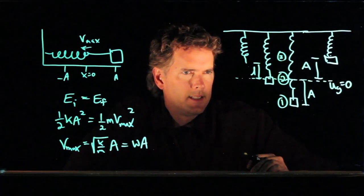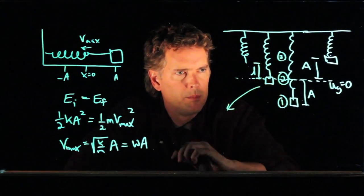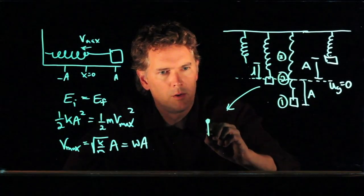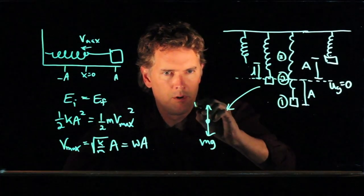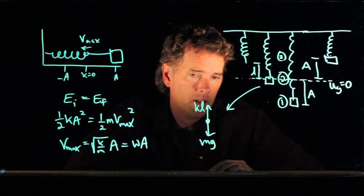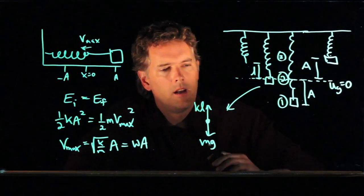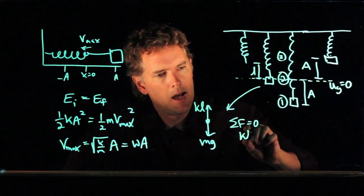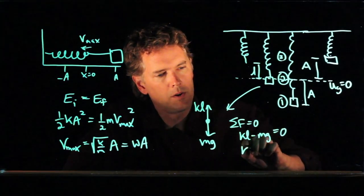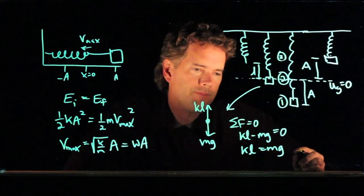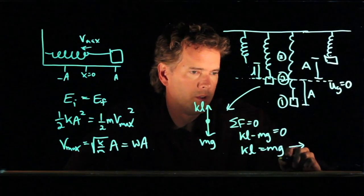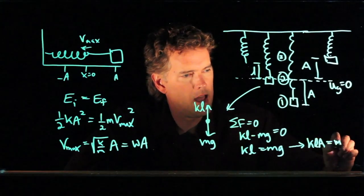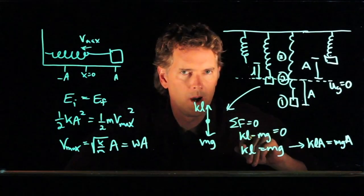Before we do that, let's see if we can figure out what this new equilibrium position is. When you hang the mass from the spring, there is gravity acting on that mass, but there is the spring force holding it up. And if it stretches a distance L, then the spring force is equal to KL. And so now look what we have. Those forces have to be zero when it's just hanging there. And so we get KL minus MG equals zero, or KL equals MG. And now let's do one more little trick, which we will use later. Let's multiply both sides of this equation by capital A. KLA equals MGA. And we'll see why we did that in a second.